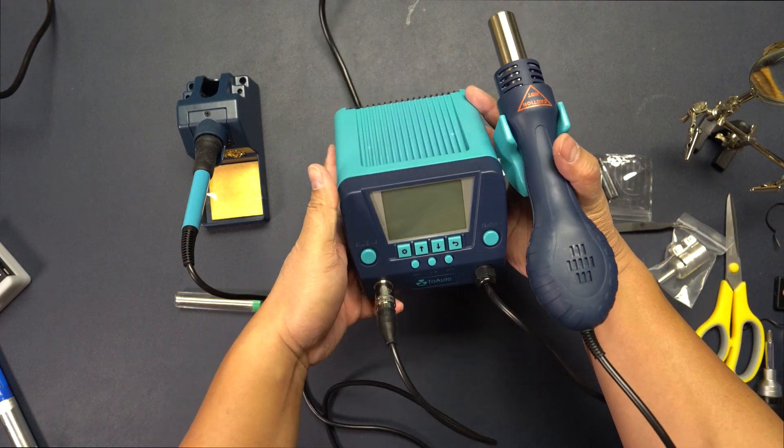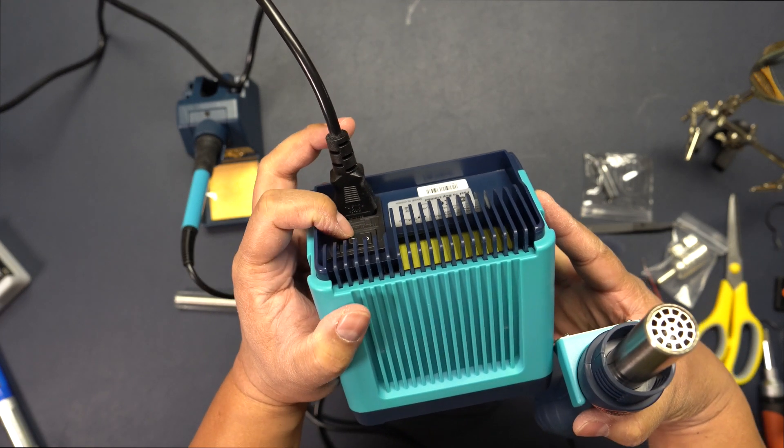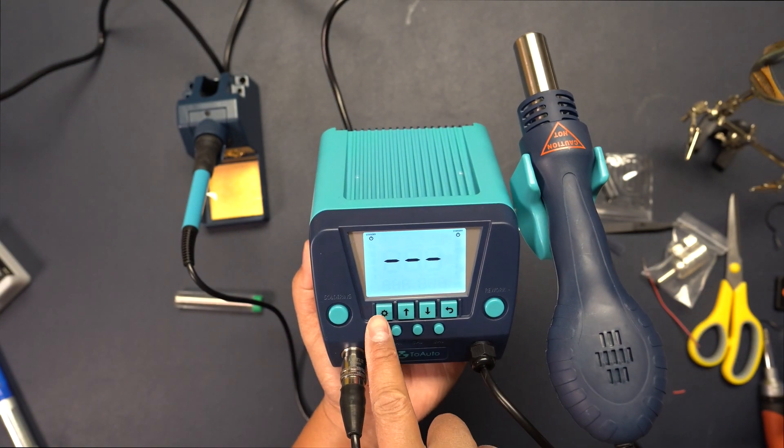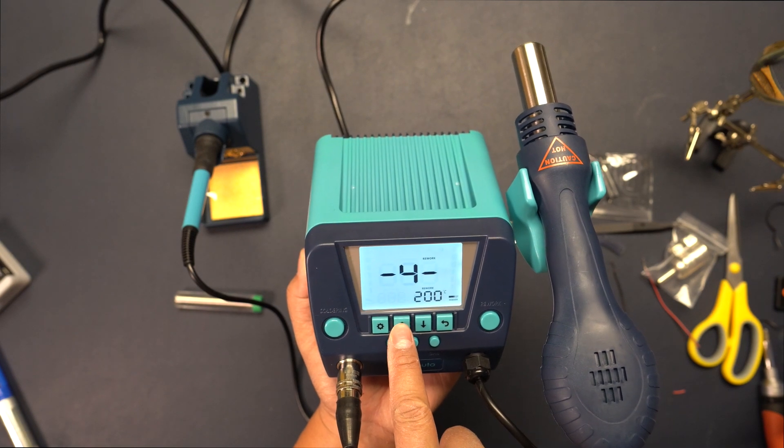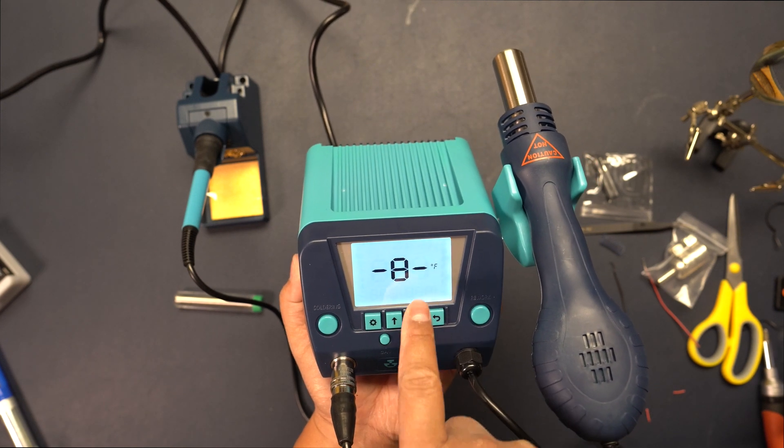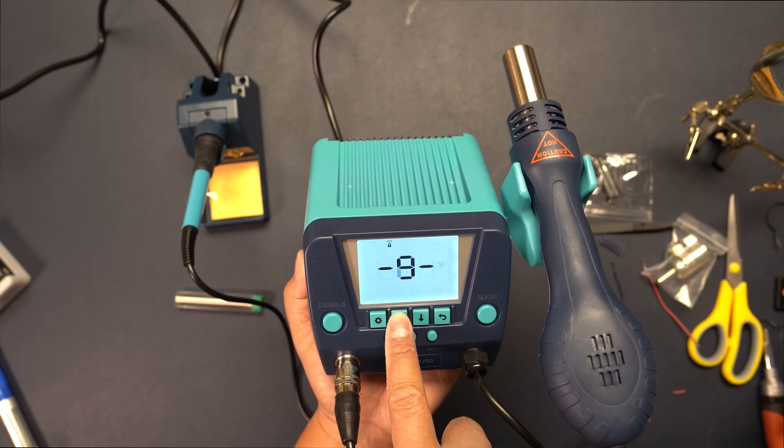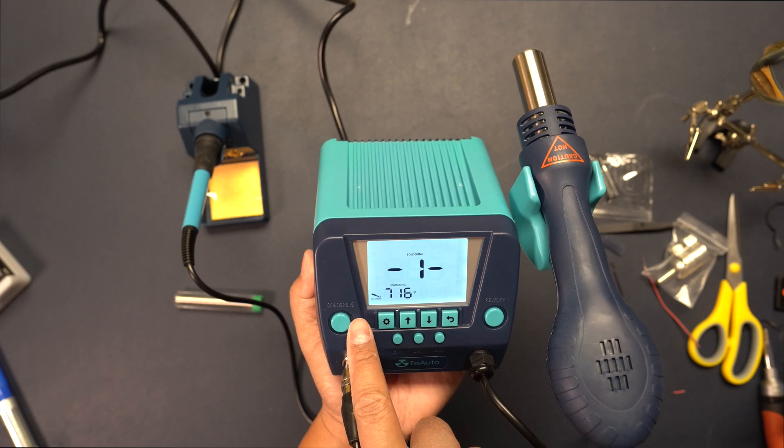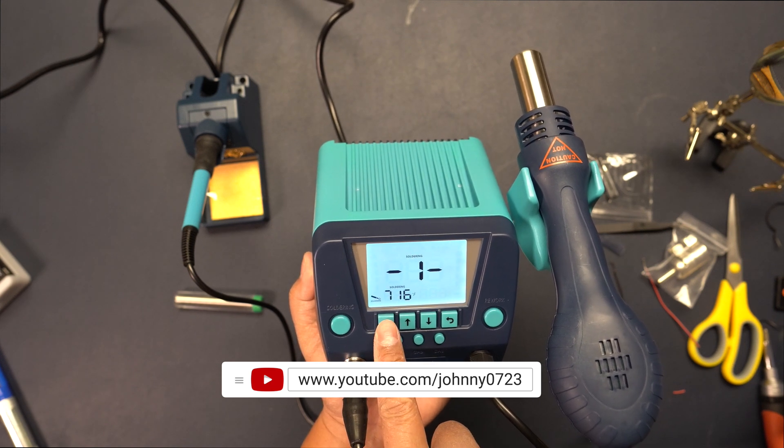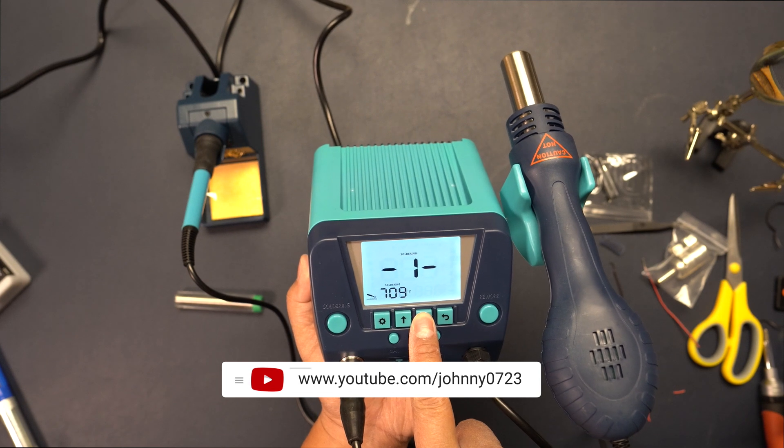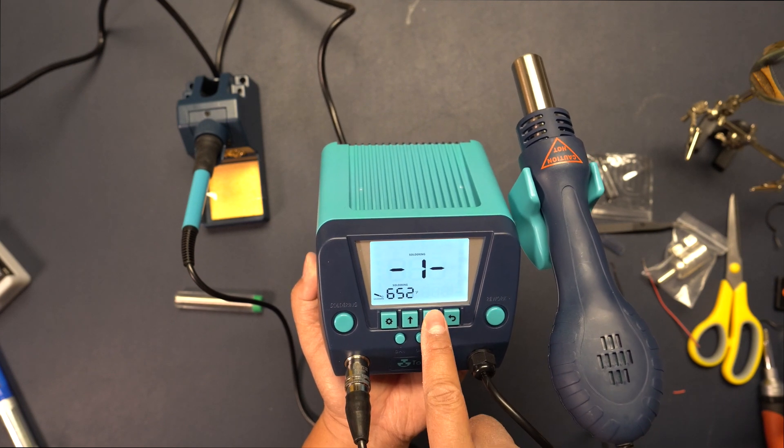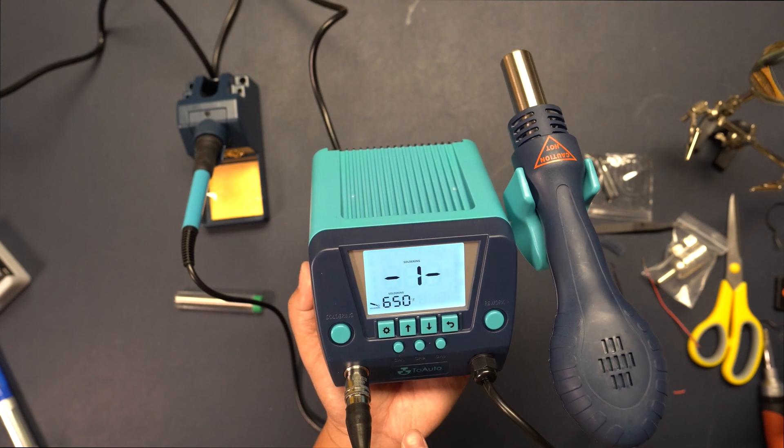Alright, so let's set the temperature. Let me turn it on - in the back there's a switch right here. Oh, the display lights up. I'm gonna change this to Fahrenheit first by going to number eight. It's on Celsius. I'm gonna hit the button, it's flashing. Change to Fahrenheit, press it again to save. Now I'm gonna go back to soldering. The temperature is preset to like 700. I'm gonna hit it, change that to like 650 and save it right there.